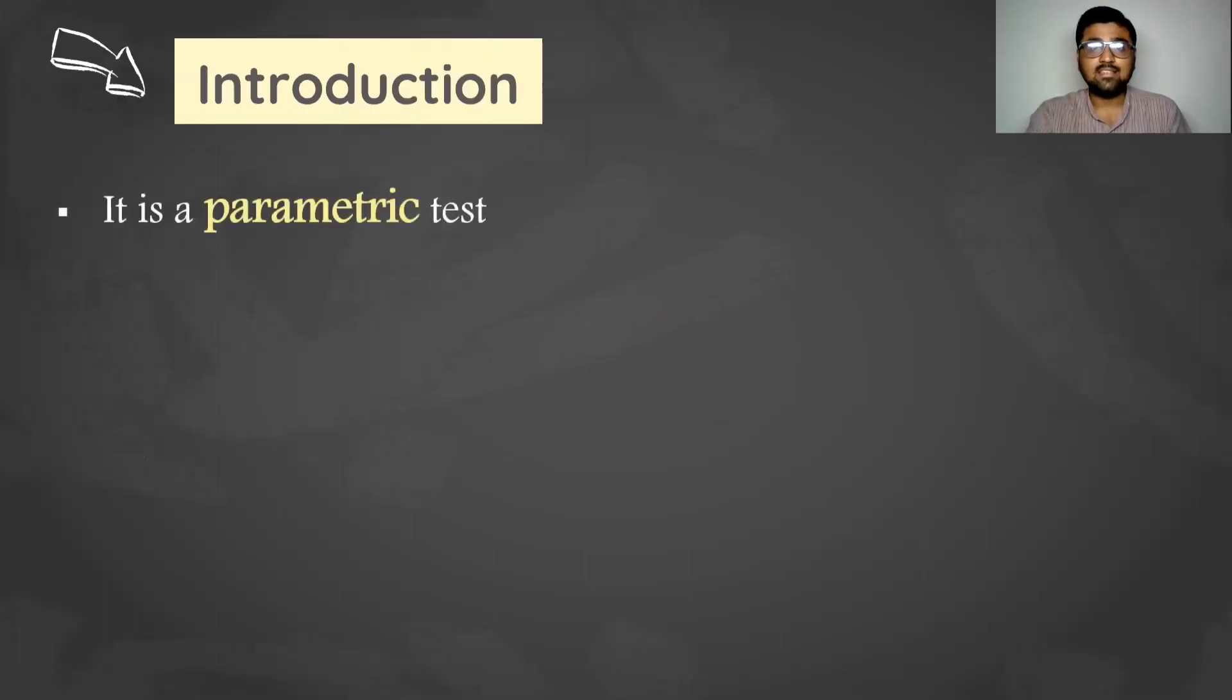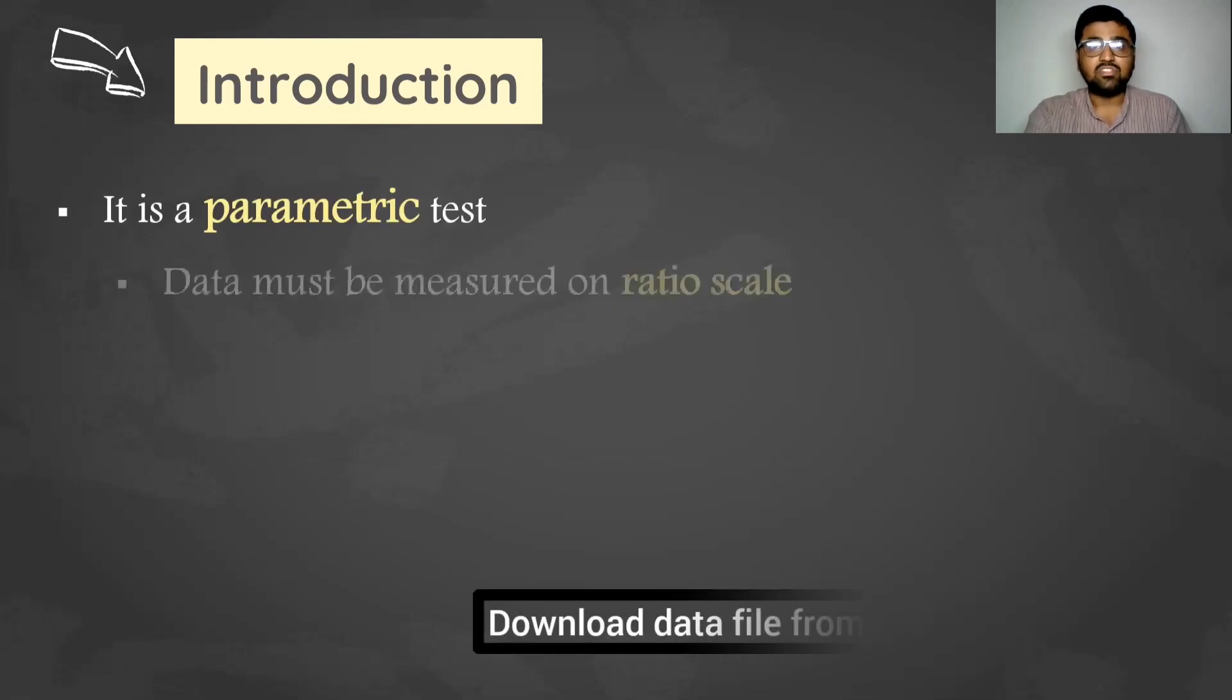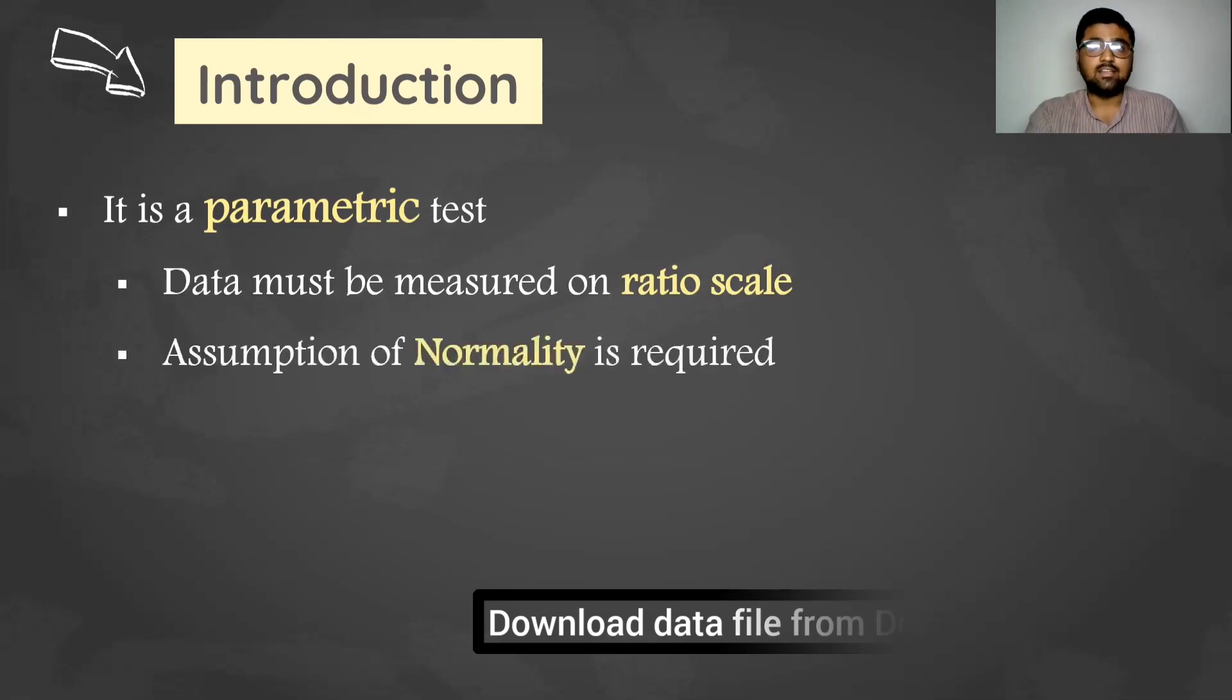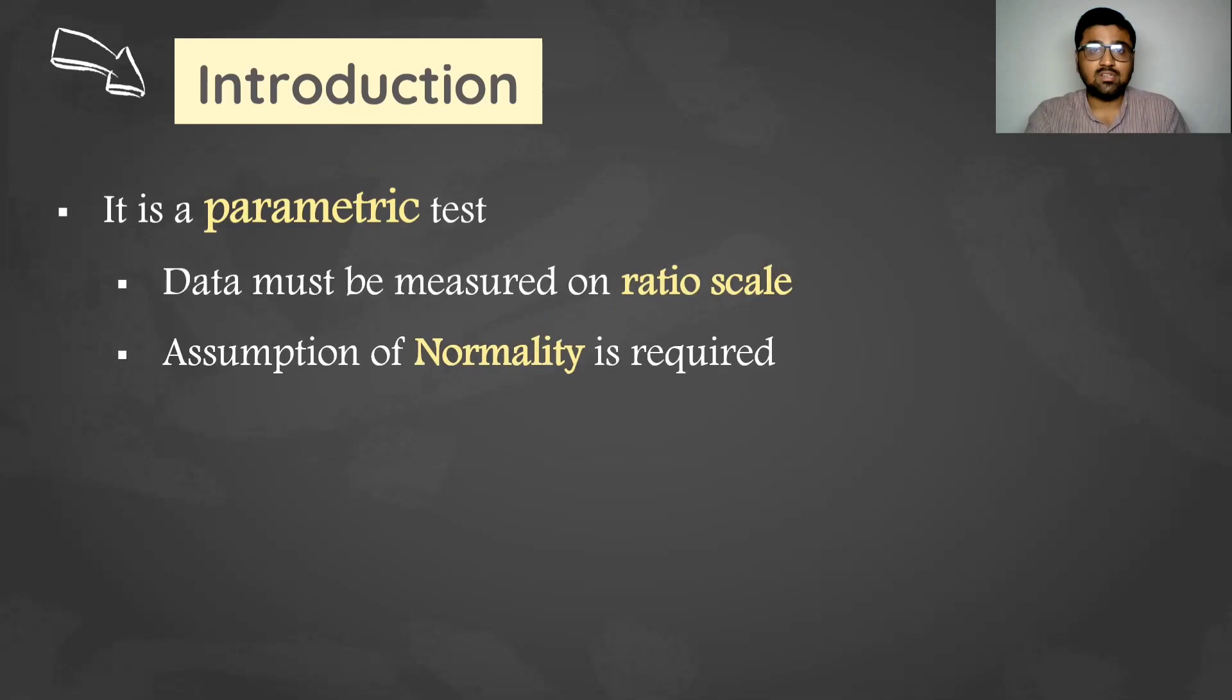Paired t-test is a parametric test, which means that our data must be measured on ratio scale and it should be normally distributed. So normality assumption is essential to perform this test and therefore it's a parametric test.